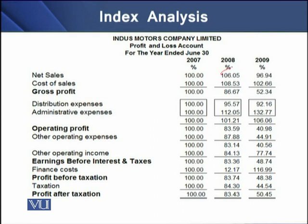In 2008, our sales were 106% of 2007 sales, and in 2009, our sales were 96% of 2007 sales — meaning 2009 total sales were approximately 97% of 2007 sales. For gross profit, 2008 gross profit was only 86.67% of 2007 gross profit, and in 2009 it was 52.34% of 2007 gross profit.